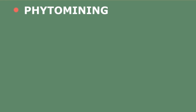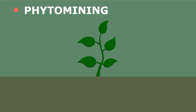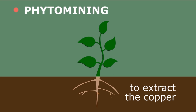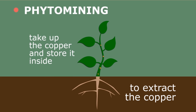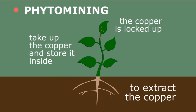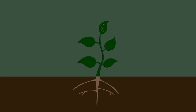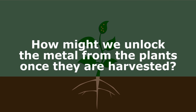The other method is phytomining. Some plants have the ability to extract copper by growing them on soils that contain a low grade ore. The plants take up the copper and store it inside. Once plants do this, the copper is locked up in the plant. How might we unlock the metal from the plants once they are harvested?